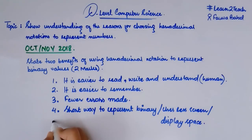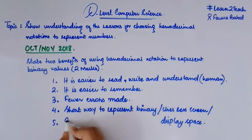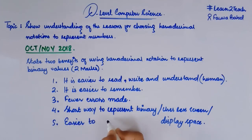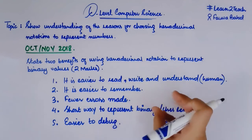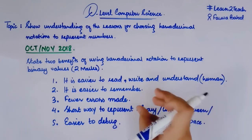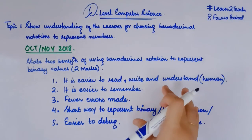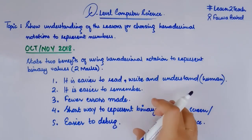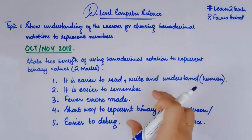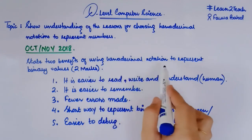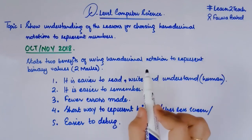What can be next? It can make debugging easier — easy to debug. Why? Because we have fewer digits. When we convert to a hexadecimal number, we have a lesser number of digits, and the fewer the digits are, the easier it would be to debug or to find out the mistakes and find out the errors. So these are some of the points we can write in the benefits of using hexadecimal notation to represent a binary number.